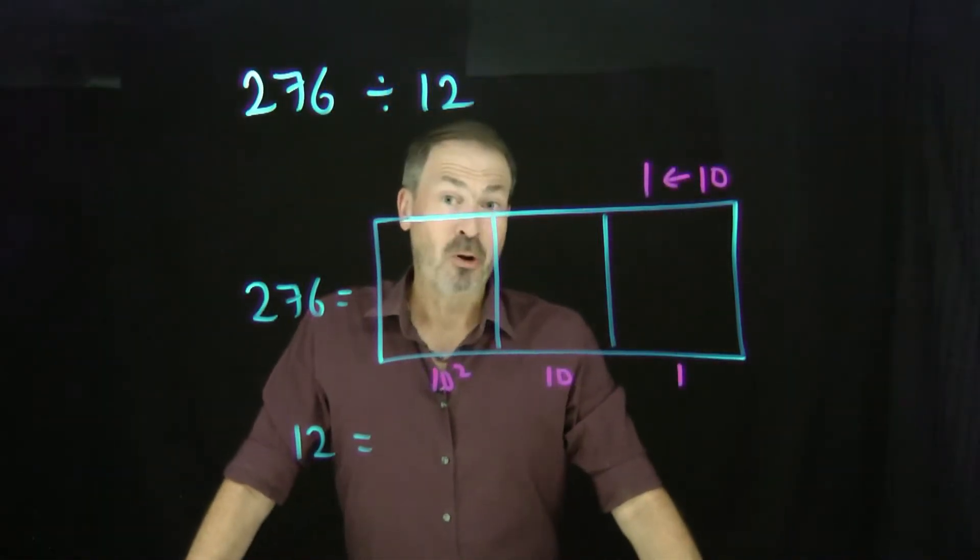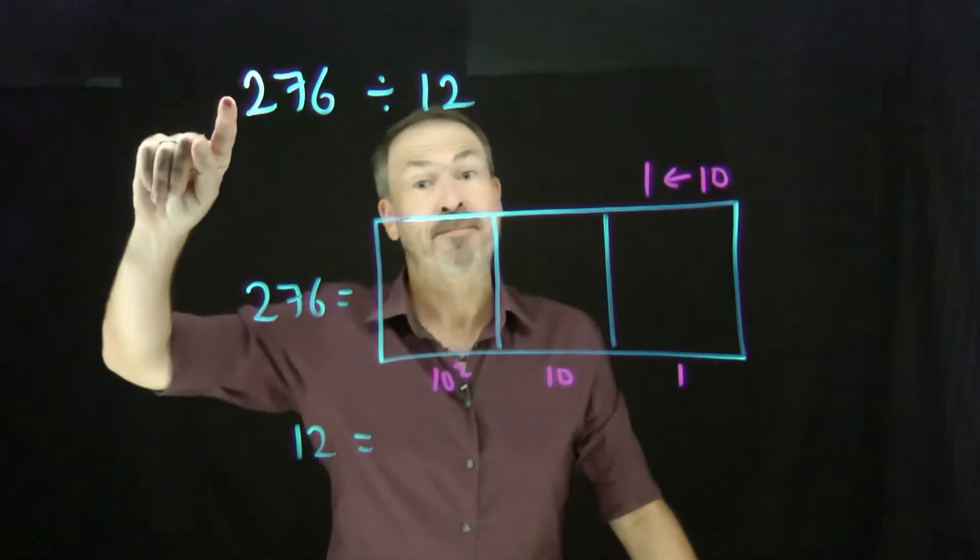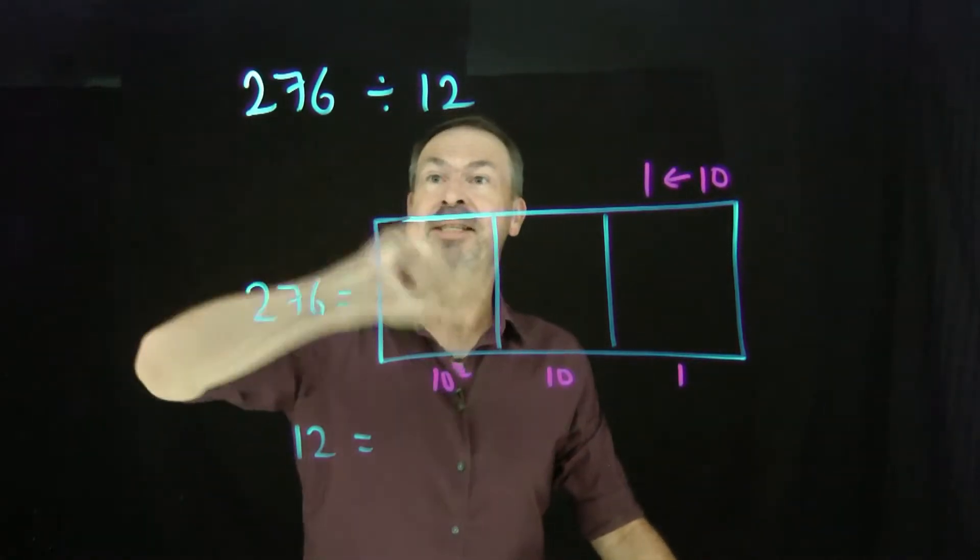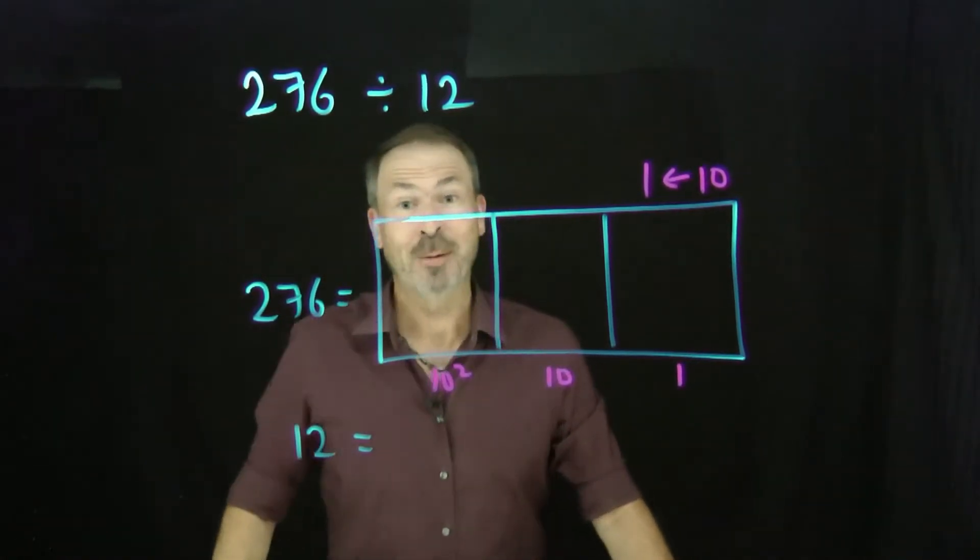Let me just spend a moment revisiting long division. Here's a long division problem in base 10 for a 10-1 machine. 276 divided by 12. And recall how we did that.